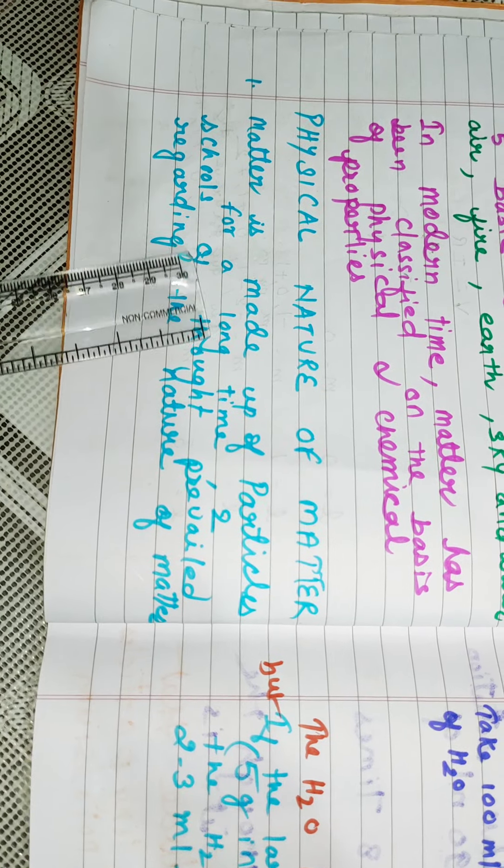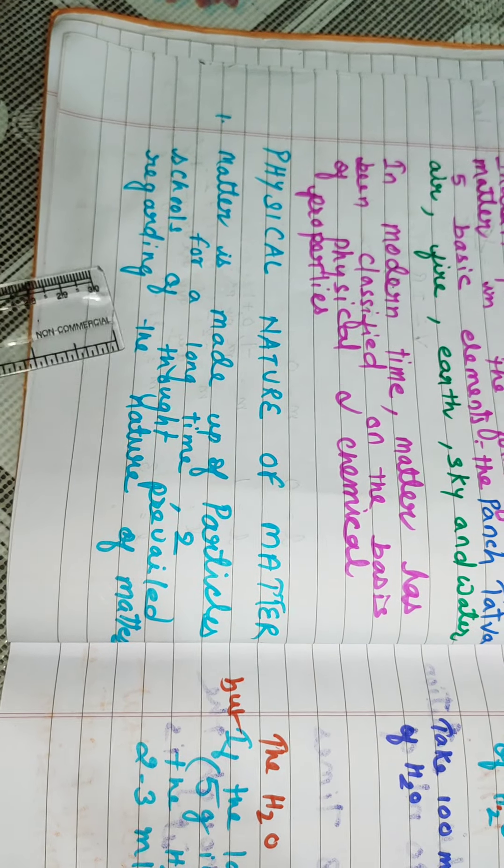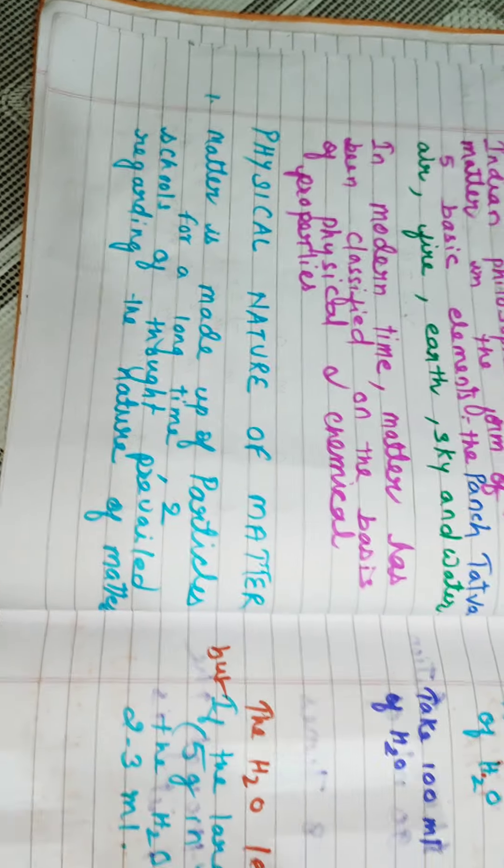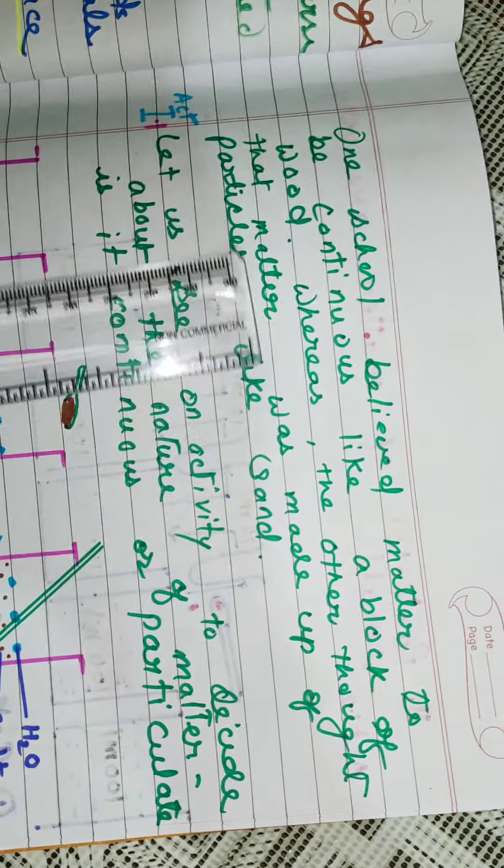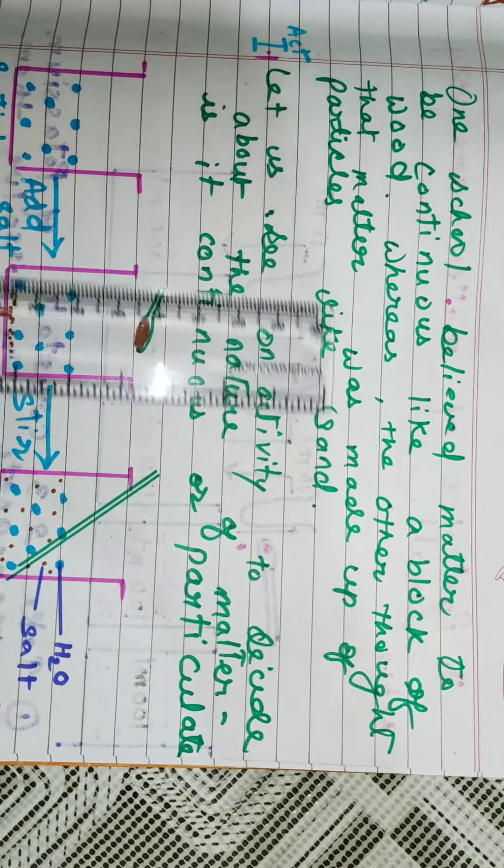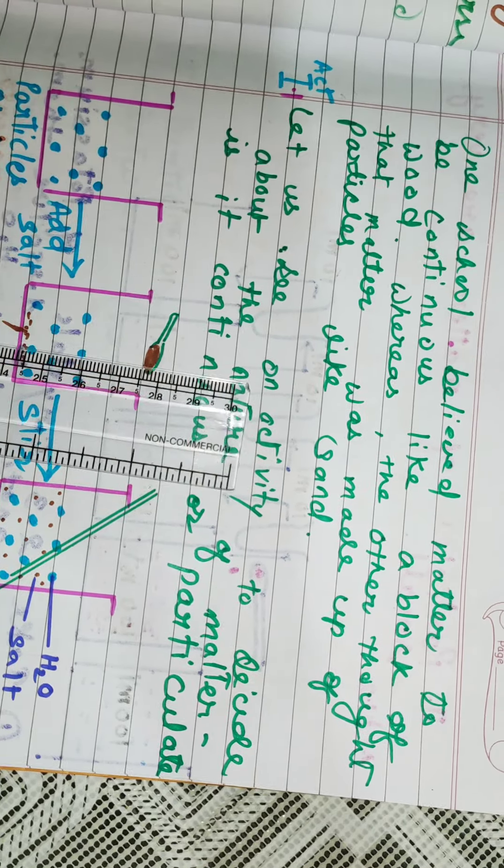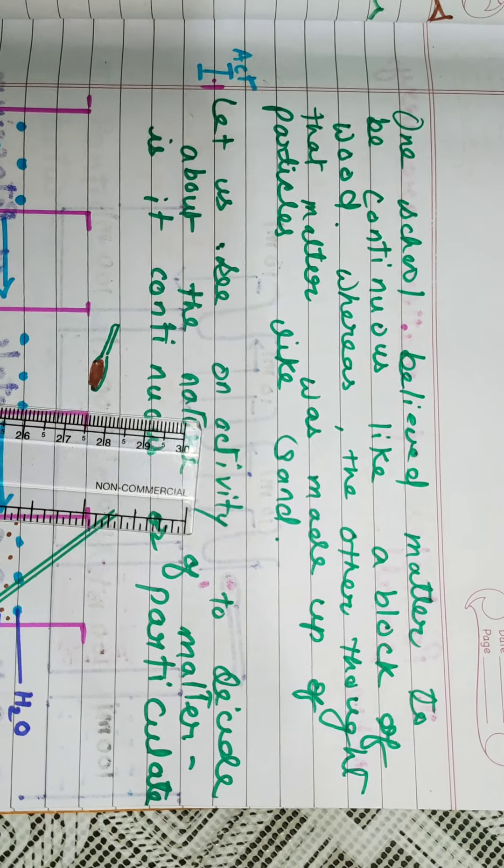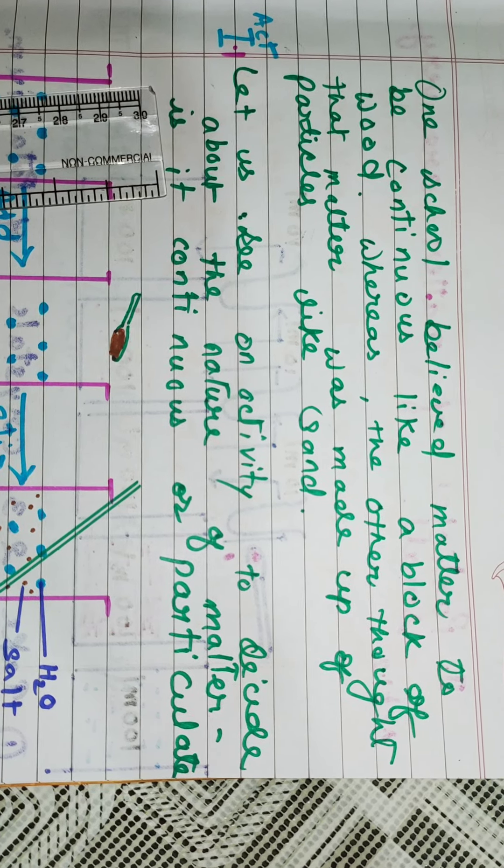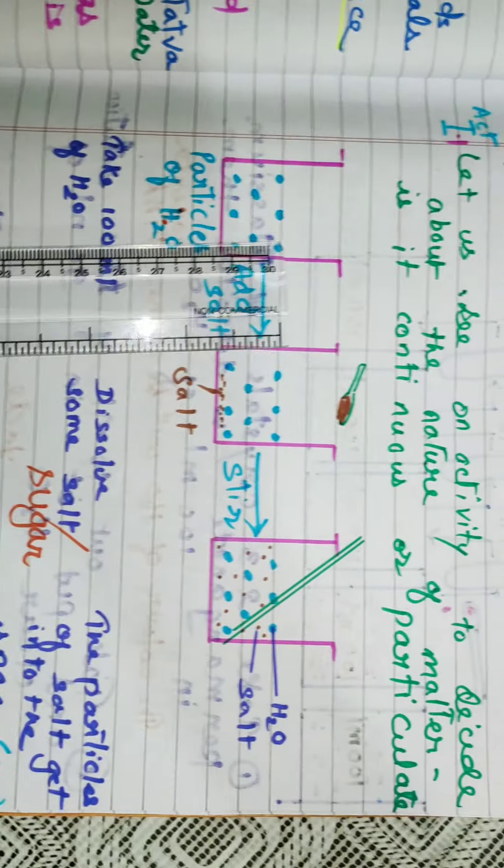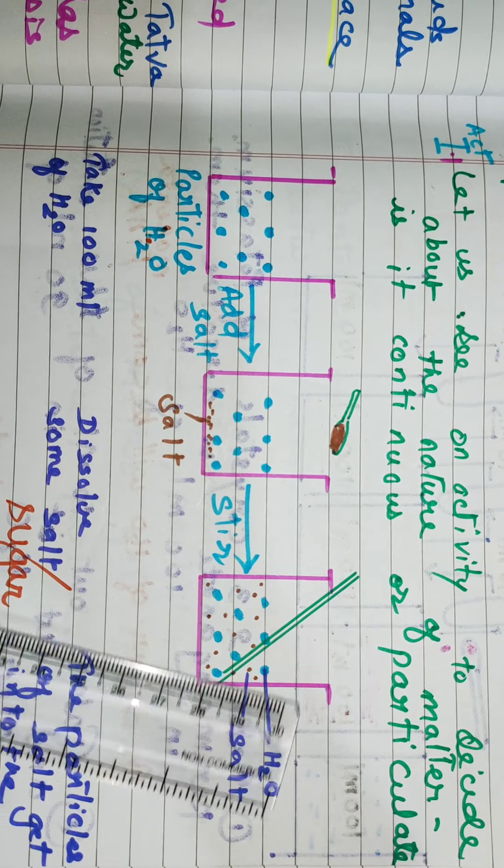Today we are going to deal with the physical nature of matter. First point is, matter is made up of particles. For a long time, two schools of thought prevailed regarding the nature of matter. One school believed matter to be continuous like a block of wood, whereas the other thought that matter was made up of particles like sand.